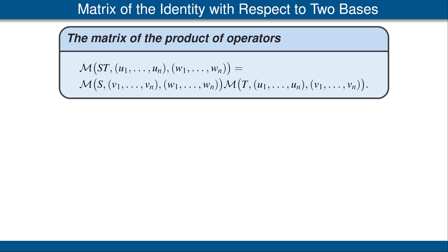Let's start this process with a review of the formula for the matrix of the product of two operators. We have two operators S and T on V, and three bases: U1 up to Un, V1 up to Vn, and W1 up to Wn. The matrix of S times T equals the matrix of S times the matrix of T, where one must be careful about the bases involved, as shown in the equation. The reason this equation holds is that we chose the definition of matrix multiplication to force this equation to be valid.